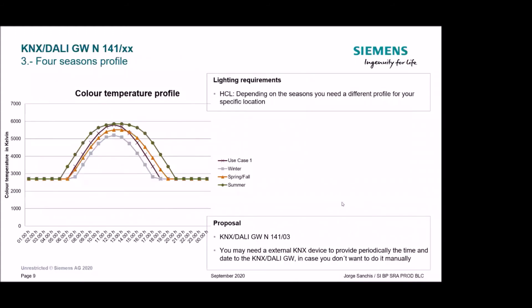The third use case: if you want these human-centric lighting profiles to vary depending on the season, you may need annual time programs — and you can do this with our KNX-DALI gateway. Depending on the season, you need a different profile for your specific location. In the graph you can see that use cases one and two share the same curve, but there is a different curve for winter, for spring and fall, and a different one for summer, because the sun rises at a different hour.